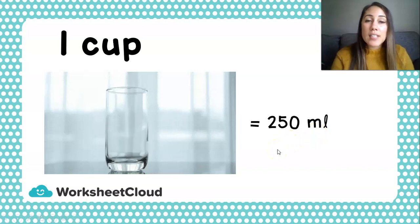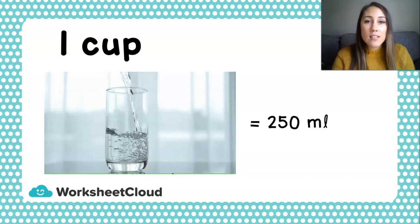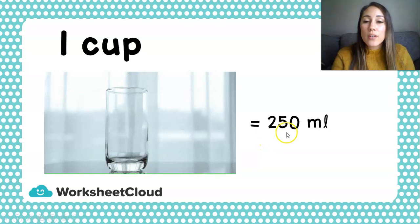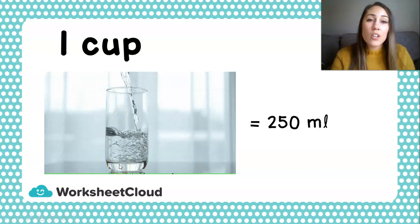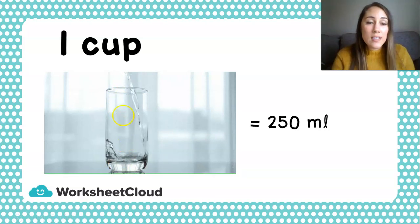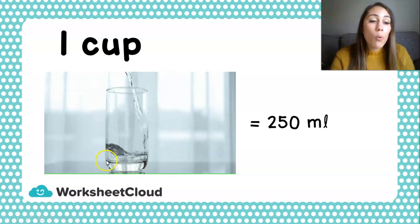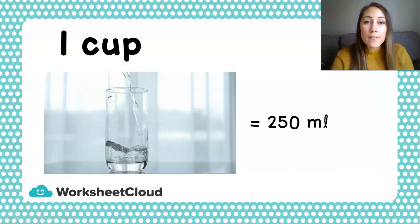Mommy and Daddy might have a cup that they drink tea or coffee or hot chocolate out of, and you'll notice that those cups are all different sizes. One cup is not always the same as the cup that you drink coffee or tea out of — that is just the name we give to 250 milliliters. If we took this glass, pretending it holds 250 milliliters, we could draw 250 little lines equally spaced on the side to see where one milliliter, two milliliters, three milliliters, or four milliliters might be, all the way up to 250 milliliters.